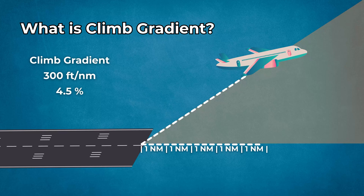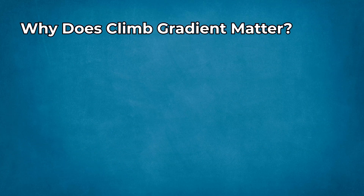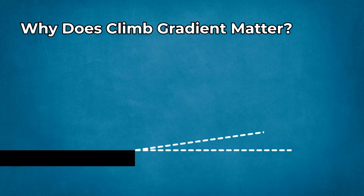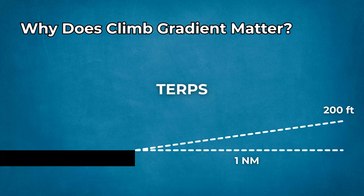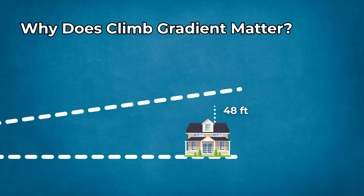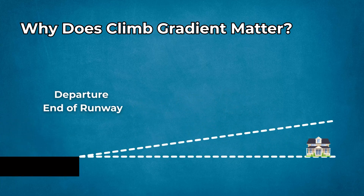That's about 4.9%. Why does climb gradient matter? The standard climb gradient used in instrument departure design is 200 feet per nautical mile, based on standard terminal instrument procedures criteria. This slope provides approximately 48 feet of obstacle clearance at one nautical mile from the departure end of the runway.